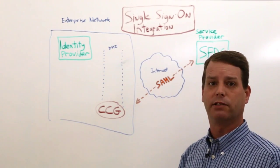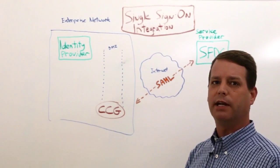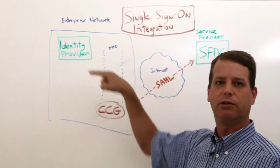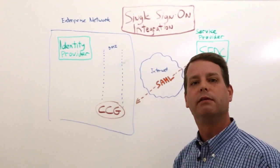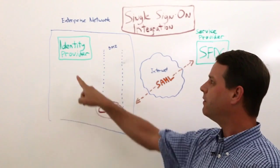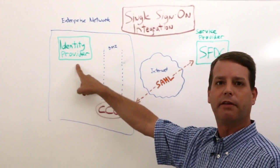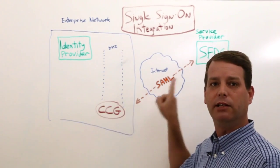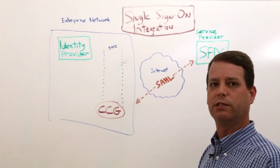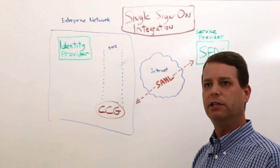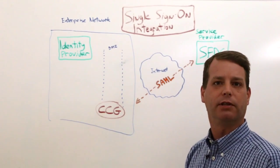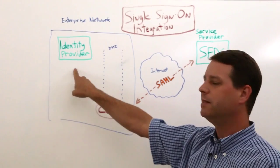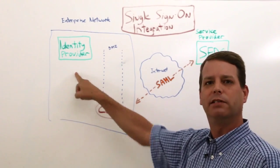In our case here, we have a service provider — Salesforce — that's the SP. We want anyone that knocks on the door at the SP to come through us to go talk to the IDP, the identity provider. The identity provider handles all the authentication. We don't know anything about the user, and neither does Salesforce really. Salesforce just wants to know: is the user coming back a valid user? He just needs to know from the IDP: yes, he's a valid user.